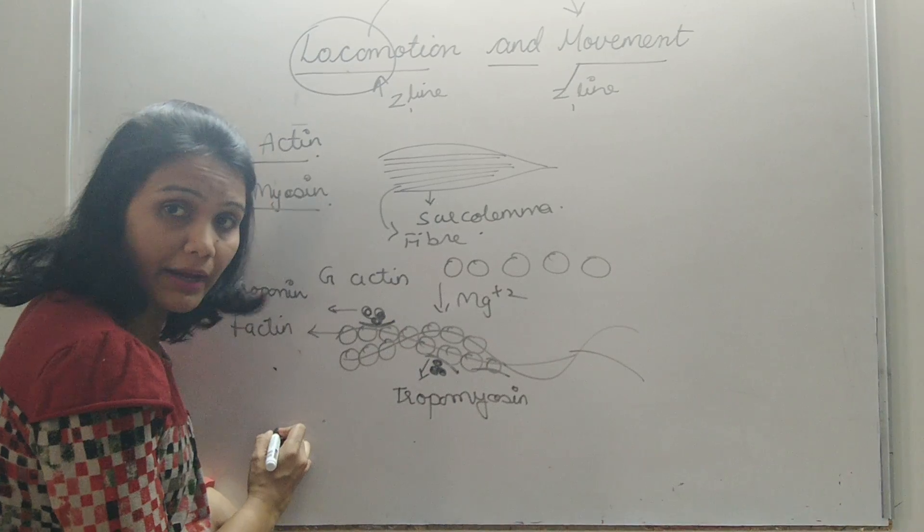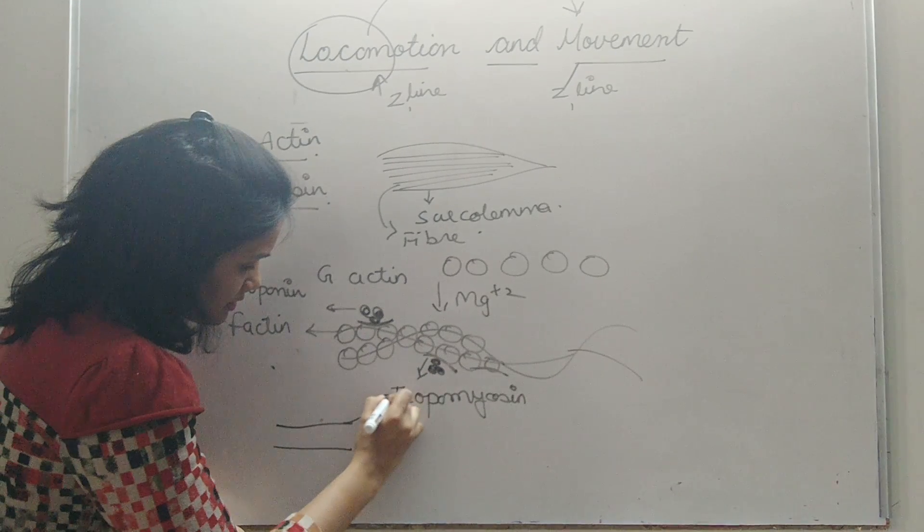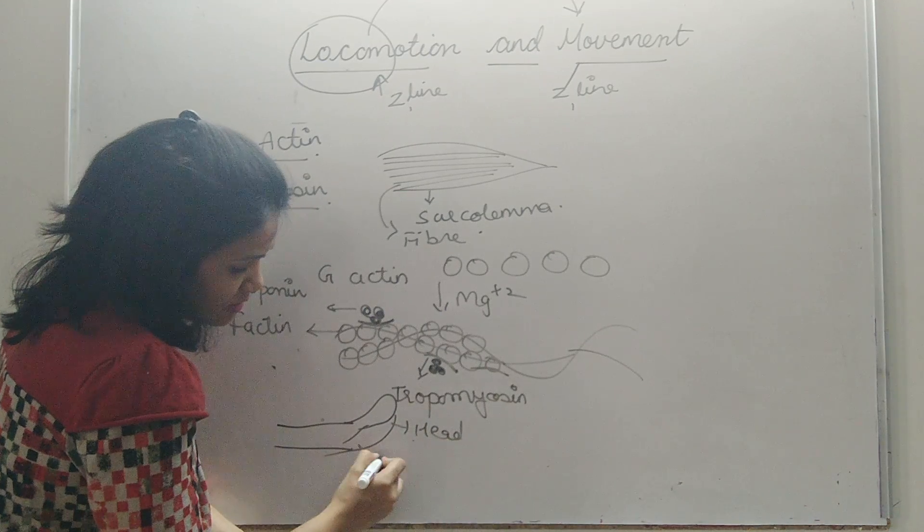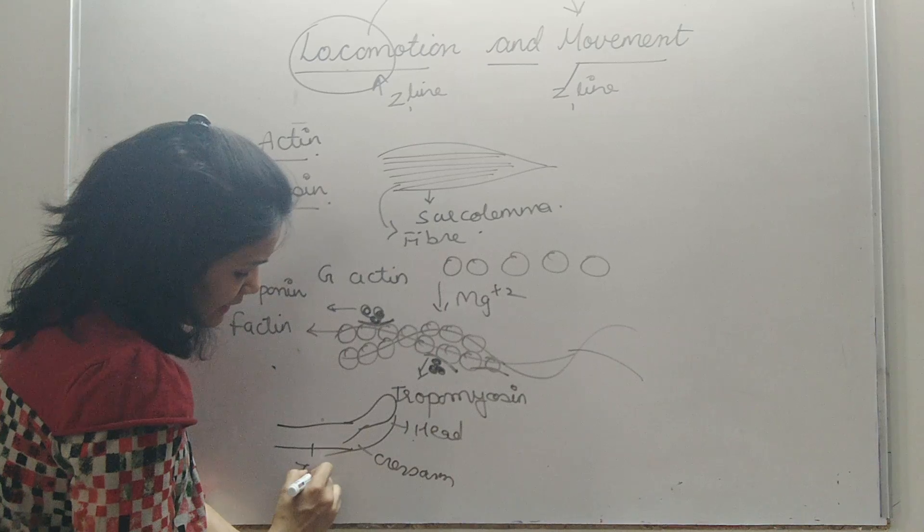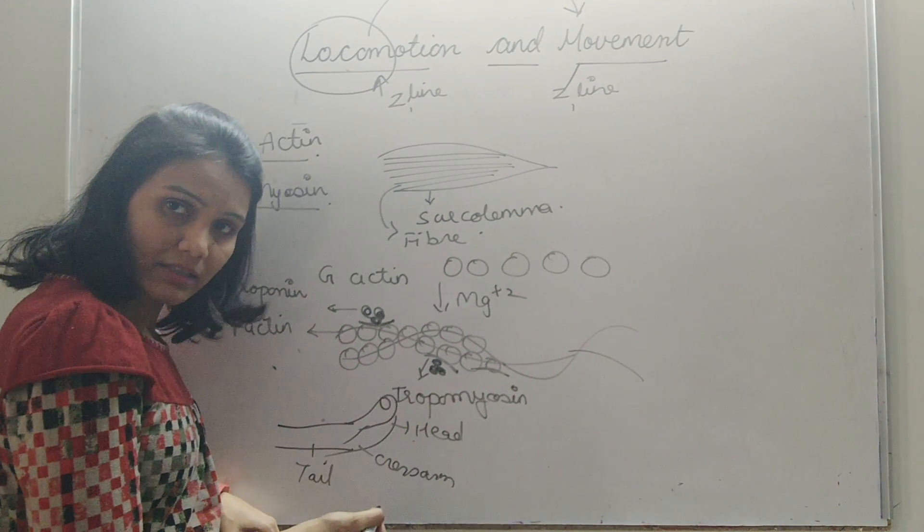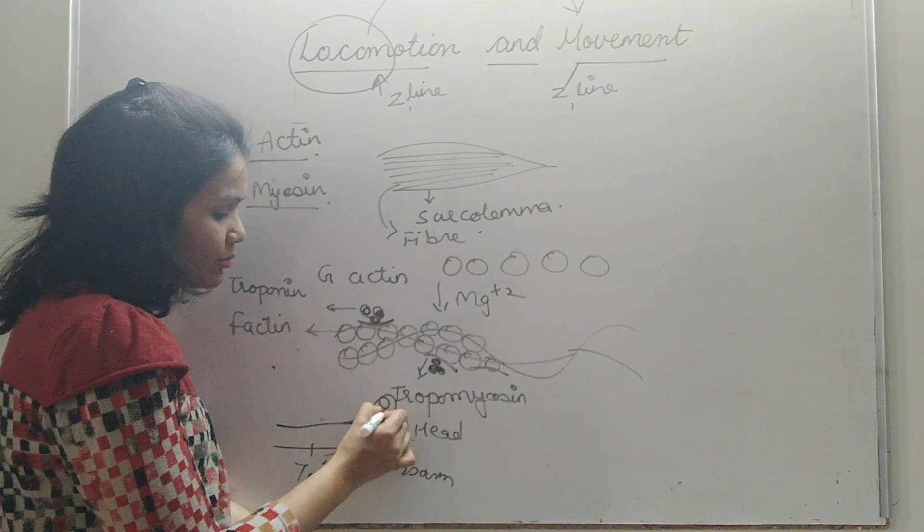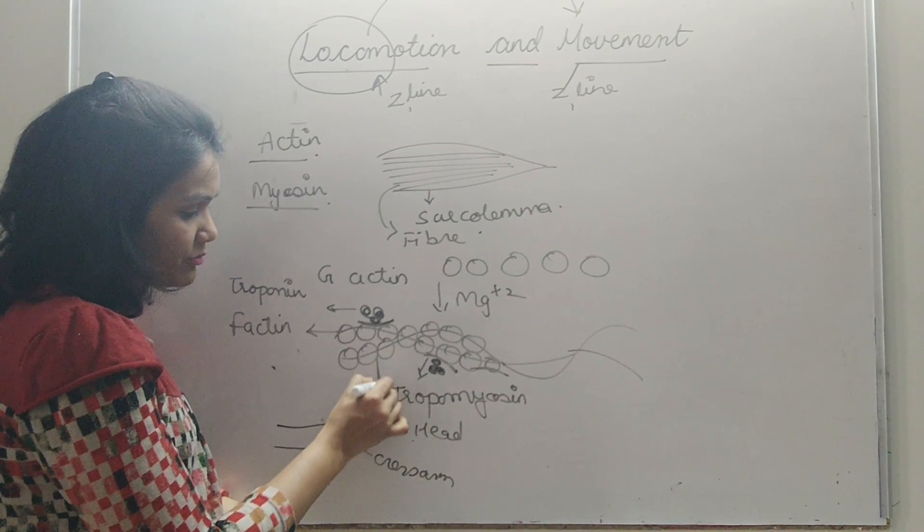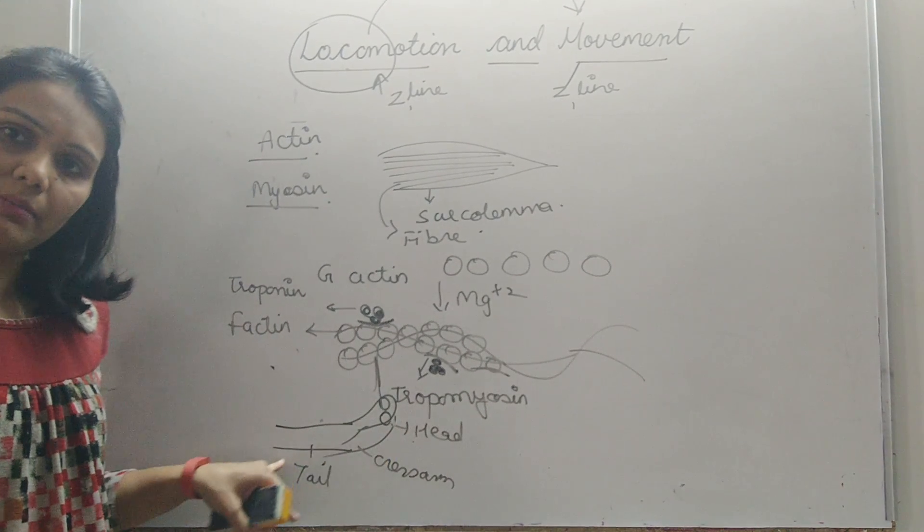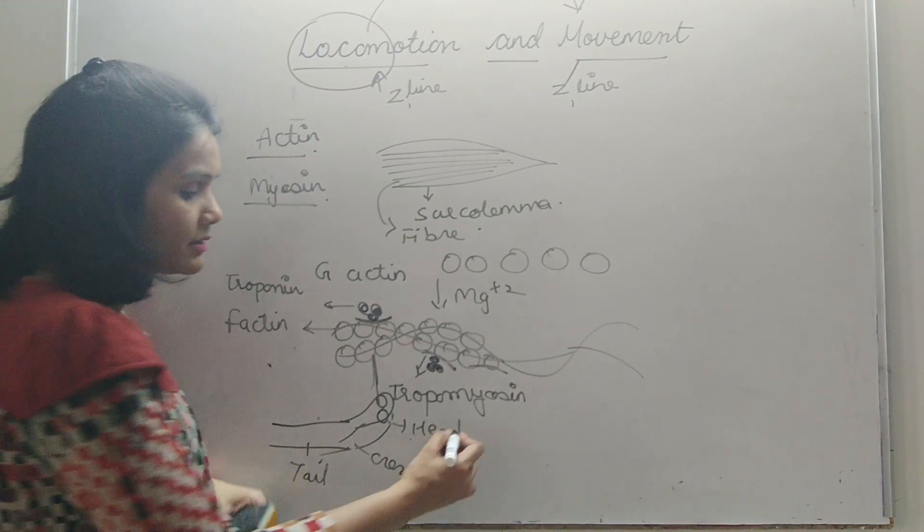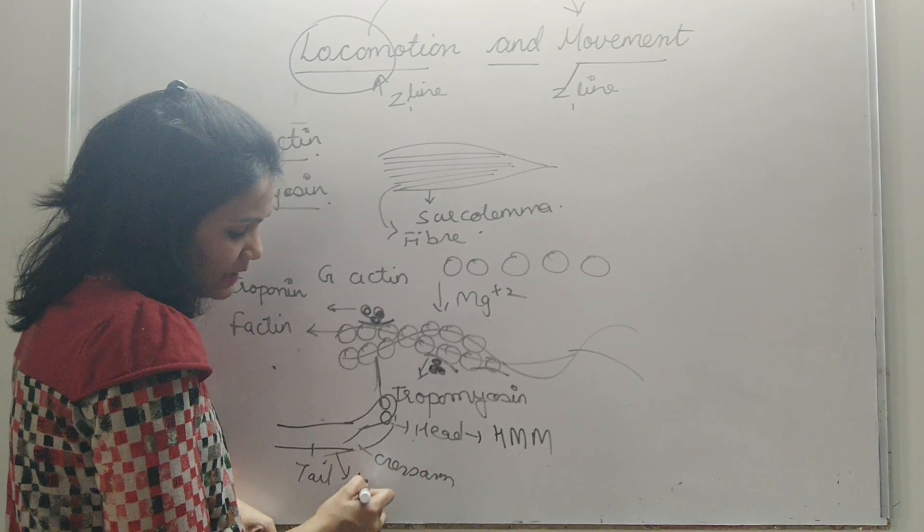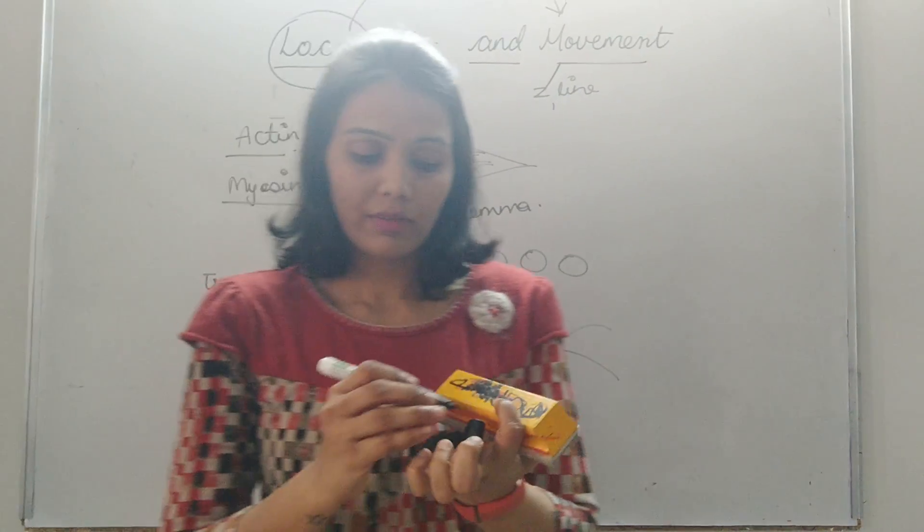Now comes the myosin. What happens in the myosin is that it consists of this type of structure: head, cross-arm and tail. Now head consists of two binding sites. One is for the ATP binding site which is the universal currency of energy and one is the actin binding site which will bind to this thin filament. The thick filament is made up of myosin - head, cross-arm and tail. What is the monomer of this myosin? Head is made up of heavy meromyosin and tail is made up of light meromyosin.